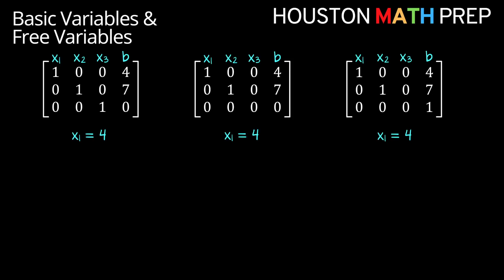If we look at the first row of each matrix, they all have the same statement which reads that variable x1 is equal to 4, and the second rows all being the same tell us that variable x2 is equal to 7. Let's focus on the subtle differences found in the last rows. For the matrix on the left, the last row as an equation simply reads that x3 is equal to 0.